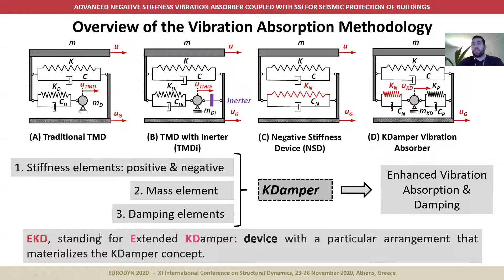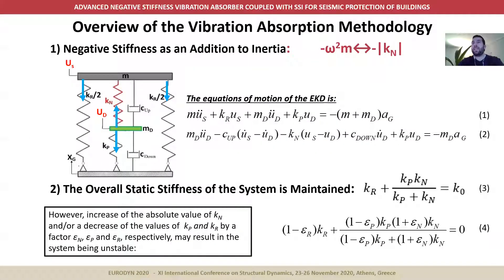In this particular presentation, the K-damper refers to the vibration absorption concept, whereas the EKD — standing for Extended K-Damper — refers to a device with a particular arrangement of mass, spring, and damping elements that materialize this concept. Let us now look into the EKD and its fundamental working principles with the help of a single degree of freedom oscillator. Specifically, an oscillator of mass M and static stiffness K_R is excited at its base by a seismic motion X_G. The EKD aims at minimizing the response U_S. The EKD is comprised of two stiffness elements KN and KP, a mass MD, and two viscous dampers, C_up and C_down.